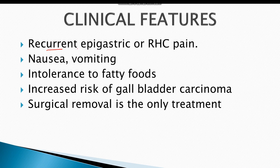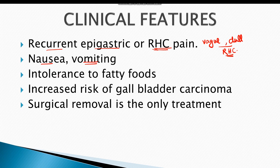The patient has a history of recurrent epigastric or right hypochondrial pain and presents with vague or dull pain in the right hypochondrium. There is also nausea, vomiting, and loss of appetite. One particular feature is intolerance to fatty foods, which often leads to flatulence. Moreover, there is an increased risk of gallbladder carcinoma.